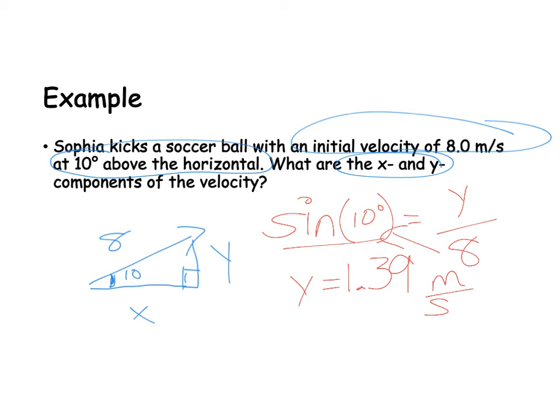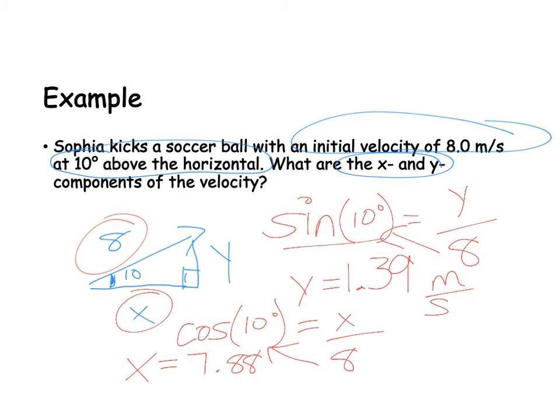Okay, and then if I am looking for my x component here, my x component is going to be, so we have the angle and the hypotenuse. So this one, we're going to use cosine because we're looking for the adjacent. So cosine of the 10 degrees equals adjacent over hypotenuse. So adjacent, hypotenuse, so same thing, cosine of 10, and then cross it up, which gives us an x component of 7.88, and that's meters per second. So there's my x component, and there's my y component.